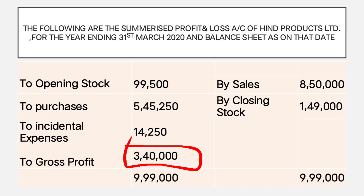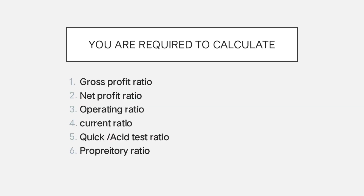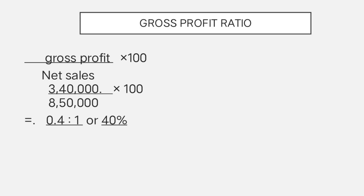First, gross profit ratio. The formula is gross profit divided by net sales into 100. Gross profit is 3,40,000 and net sales is 8,50,000. So 3,40,000 divided by 8,50,000 into 100 gives 0.4 to 1, or 40%.